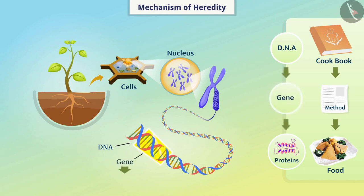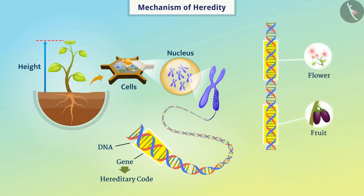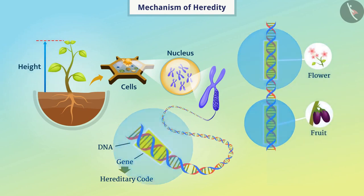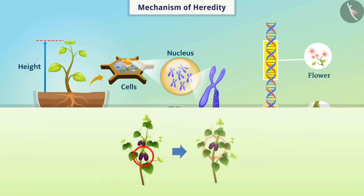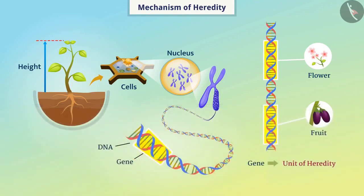The information contained in the gene is called the hereditary code. The gene of a protein regulates the synthesis of that protein and in turn regulates the expression of a character. In this way, the expression of traits is controlled by genes, so genes are called the unit of heredity. The code of every character is stored in the form of genes in the DNA. Therefore, characters are transmitted from one generation to the next by transmitting the DNA through reproduction. That is why we call DNA the hereditary material.